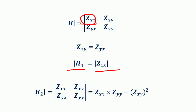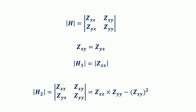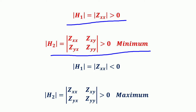If the first principal minor h1 = z_xx is positive, and the second principal minor h2, which is the determinant of the 2×2 matrix [z_xx, z_xy; z_yx, z_yy], is greater than zero, then the second order condition for minimum is met. That is, when h1 > 0 and h2 > 0, the Hessian fulfills the second order condition for minimum.